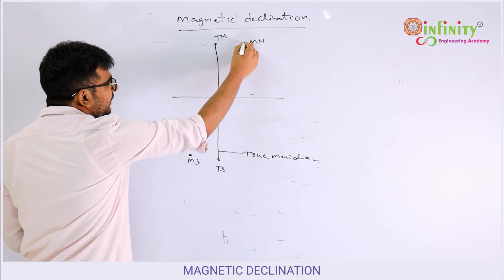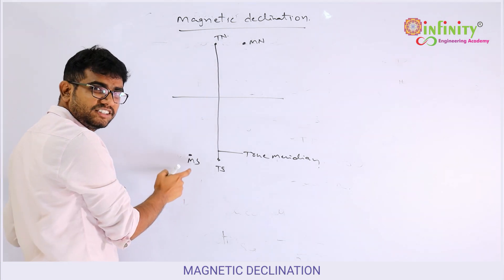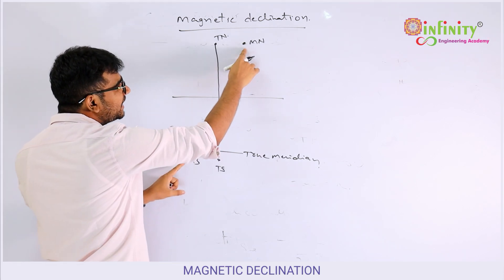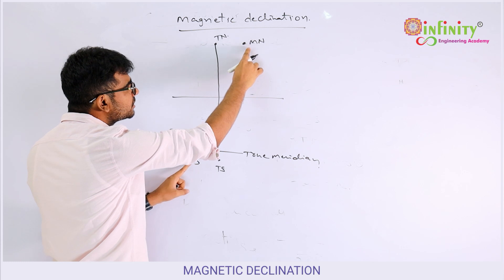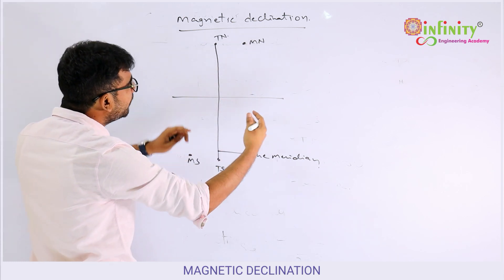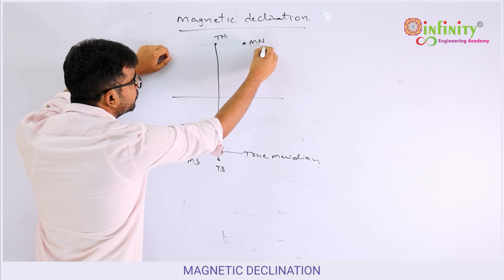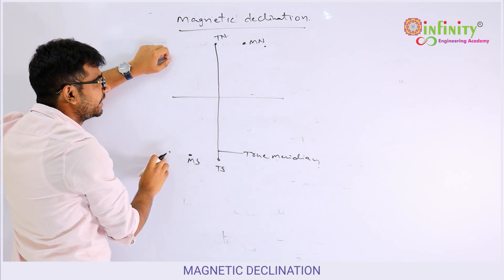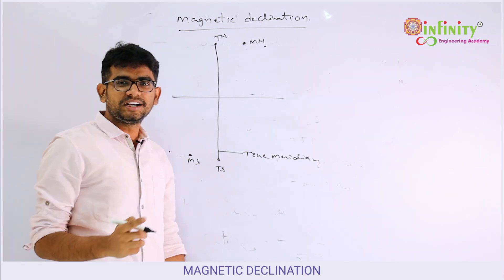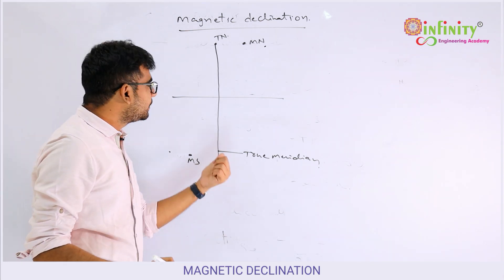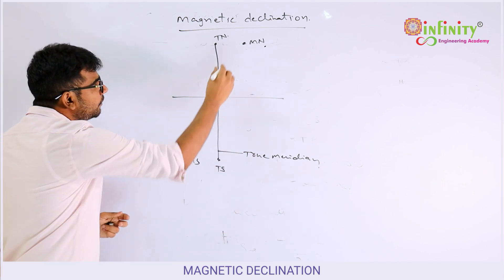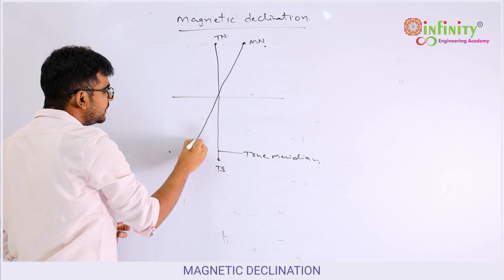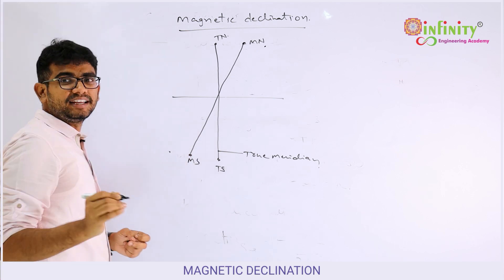Earth also consists of magnetic north and magnetic south, and their positions continuously change. Today the magnetic north and magnetic south positions may be here, but tomorrow they may shift to some other point. So the position of the true meridian is always fixed, but the position of the magnetic meridian changes. The line joining magnetic north and magnetic south is called the magnetic meridian.